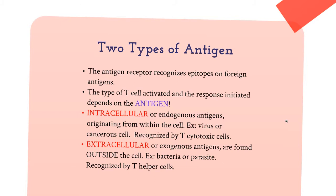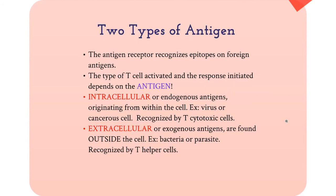Both surface markers are essential for the activation of T cells. T cells have TCRs on their surface, each recognizing a unique antigen. There are two types of antigens: intracellular and extracellular. Intracellular or endogenous antigens, such as from a virus or a cancer cell, are recognized by cytotoxic T cells. T helper cells will recognize an epitope from an extracellular or exogenous antigen, such as a typical bacterial or protozoal infection.